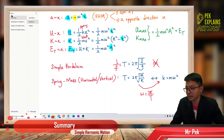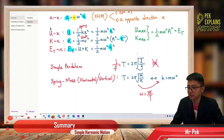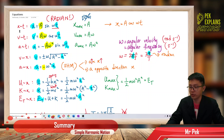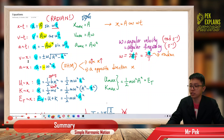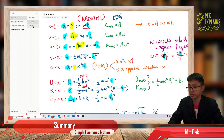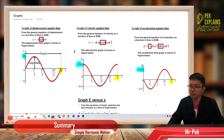You must know when to use which formula. If a question gives you time and asks for displacement, use the x-t equation. If it gives time and asks for velocity, use the v-t equation. If it gives displacement and asks for velocity, use the velocity-displacement equation — do not use the velocity-time equation in that case.